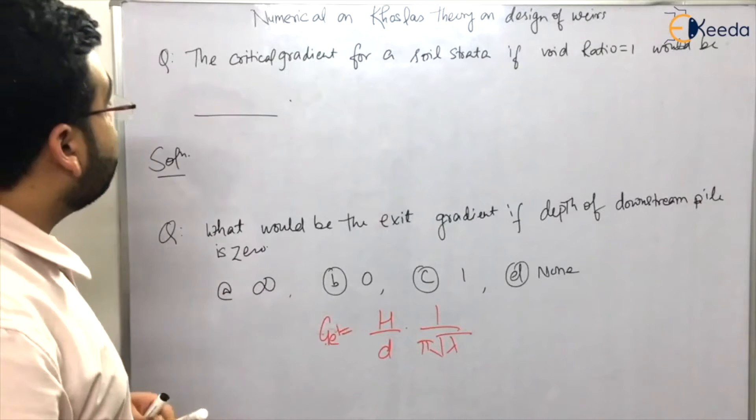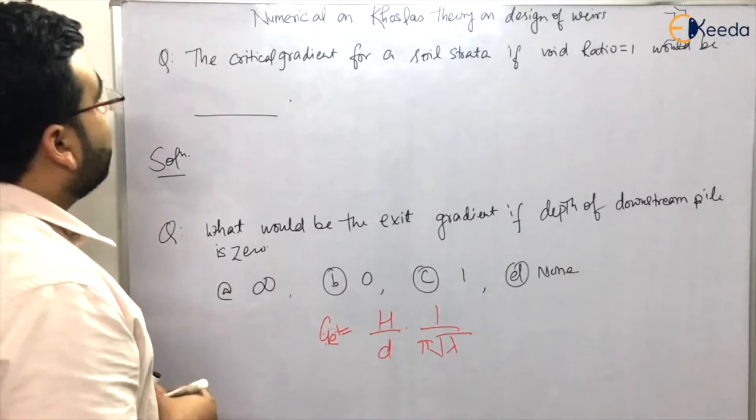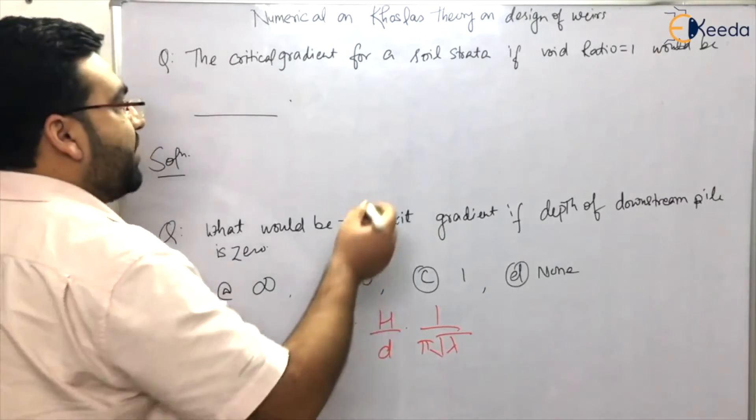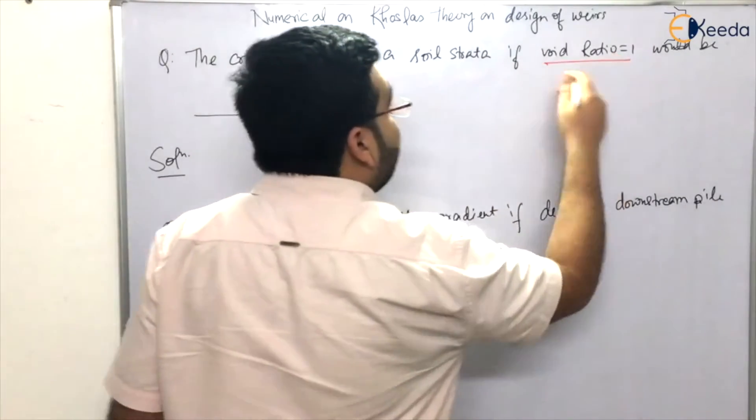Now let us solve a numerical on Khosla theory. The numerical is: the critical gradient for a soil strata if void ratio is one would be?